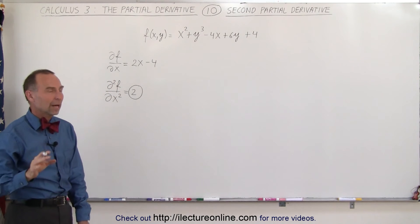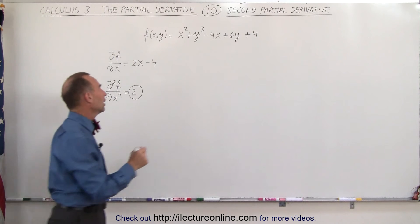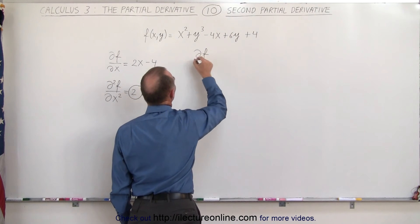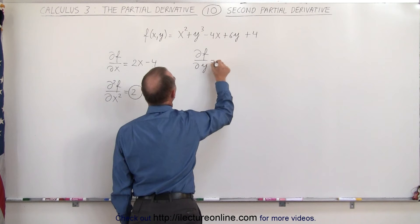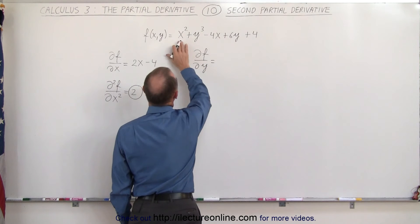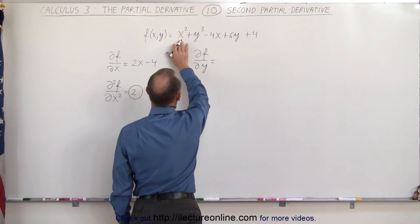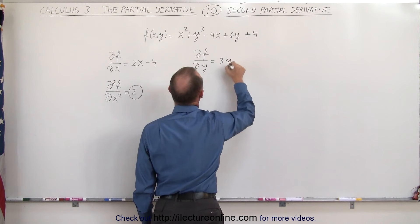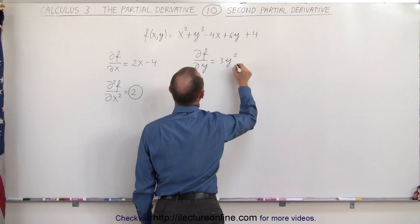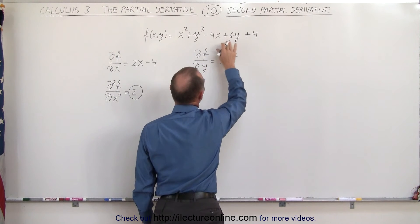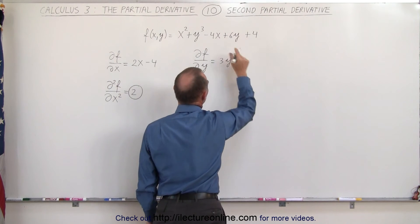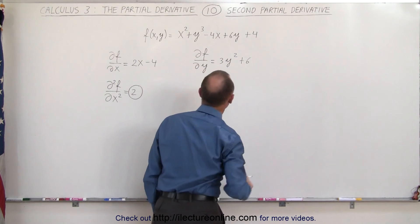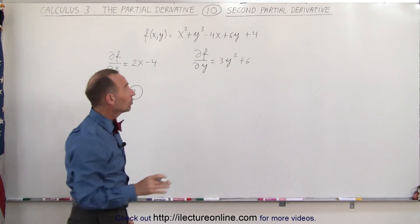Now let's do it again, but now with respect to y. The partial derivative of the function with respect to y is equal to: this becomes 0 because the partial of a constant is 0. Here we get 3y squared. The derivative of this is a constant, the derivative of this is plus 6, and the derivative of that is a constant.